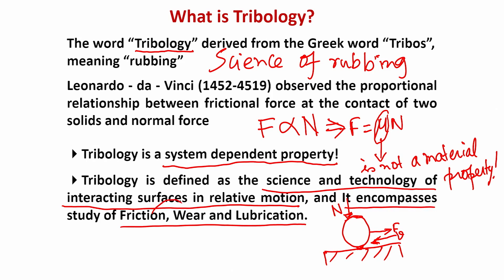Friction and wear are both system-dependent properties, but they do not have a direct correlation. A particular tribological system can experience low friction but high wear, or at the same time low wear. The same system can have high wear but low friction.